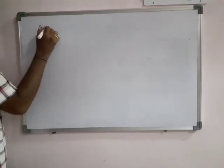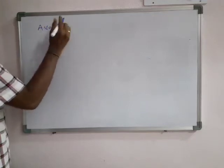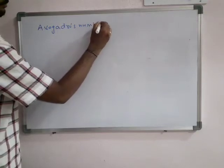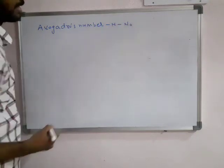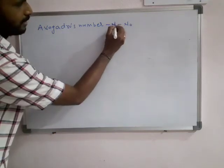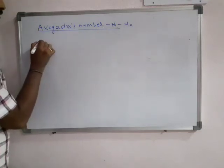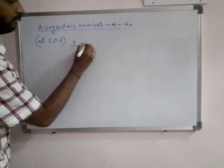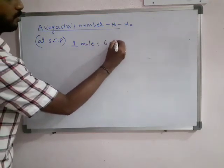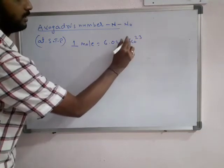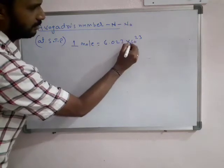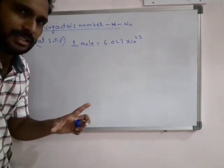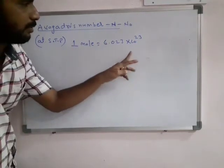There is a constant given by Avogadro that is known as Avogadro's number, denoted as N (or N0 in some books). Avogadro's number is applicable at STP. One mole equals 6.023 into 10 power 23 units. Just like 1 dozen always means exactly 12 — pencils, apples, whatever — in the same way 1 mole means 6.023 into 10 power 23, which is a fixed number.